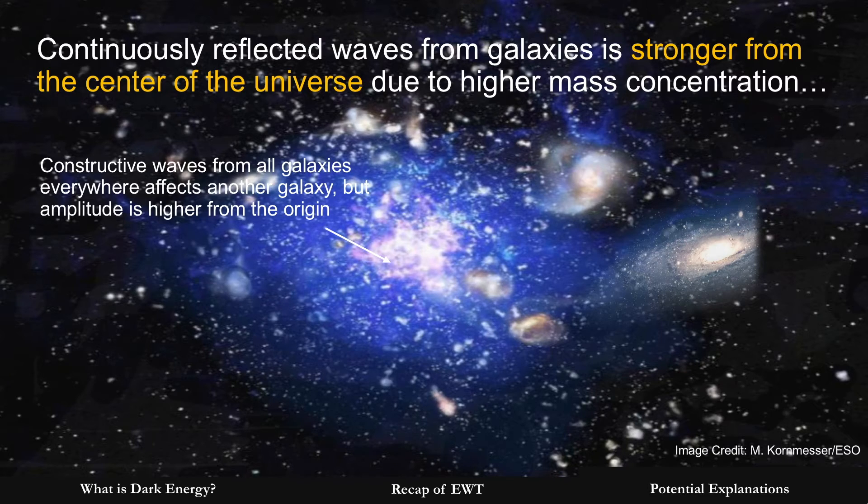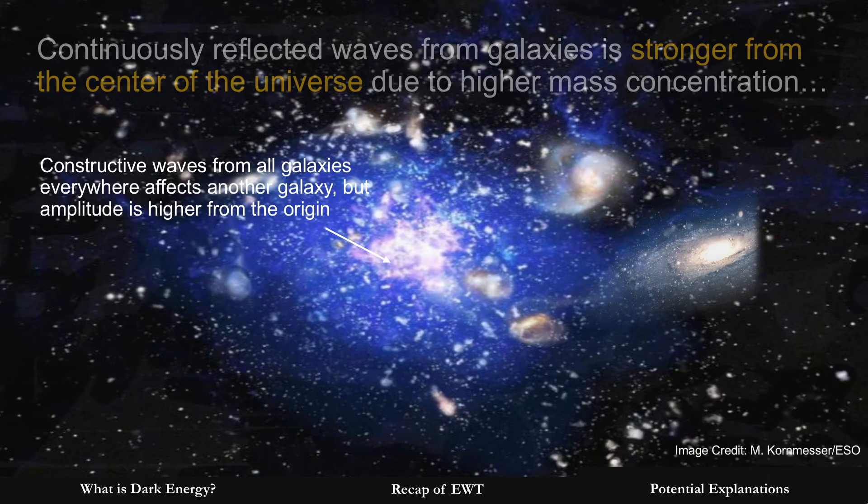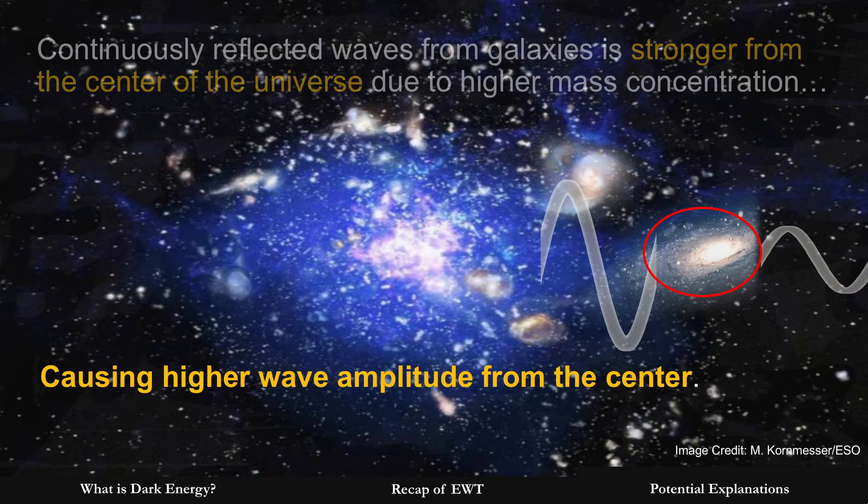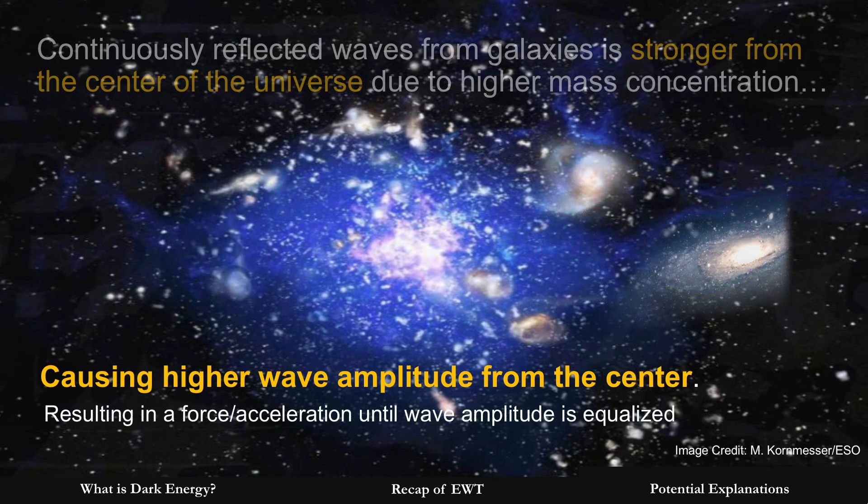Now if you assume that these waves are continuously reflected from all galaxies, it's stronger in the center of the universe due to a higher concentration of mass from where all these reflections are coming from. What that means is if you construct all of the different waves from all the different sources, it would be higher from the direction of the center.